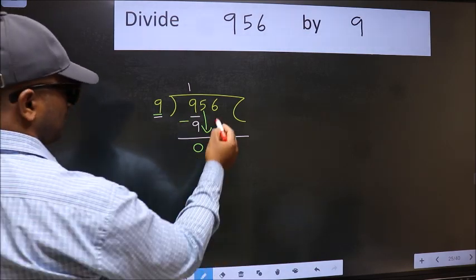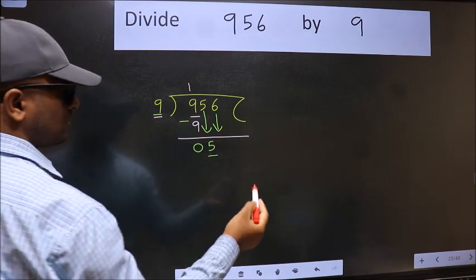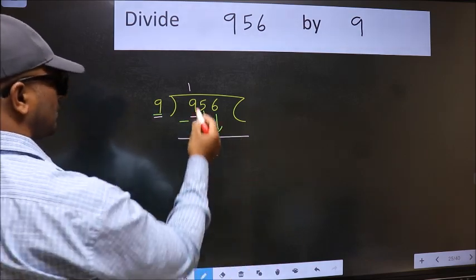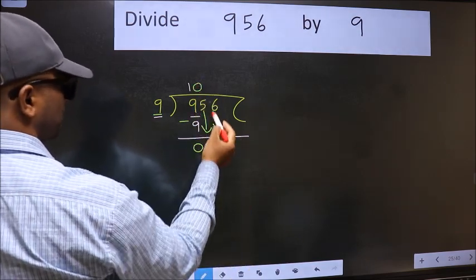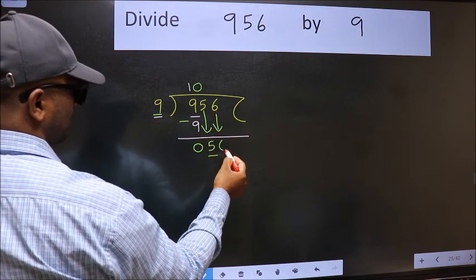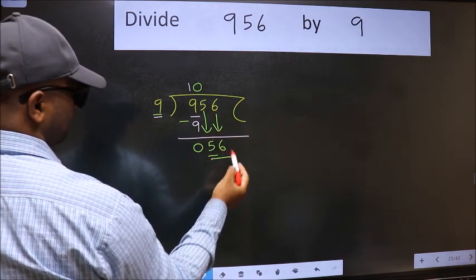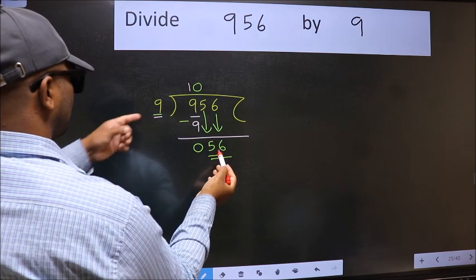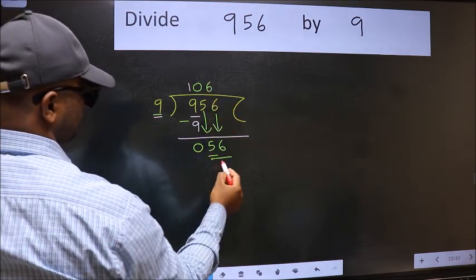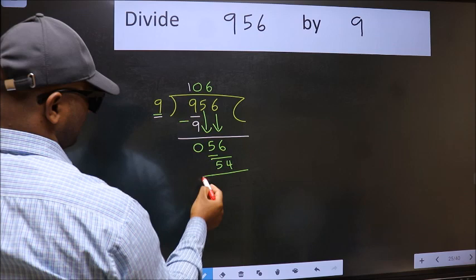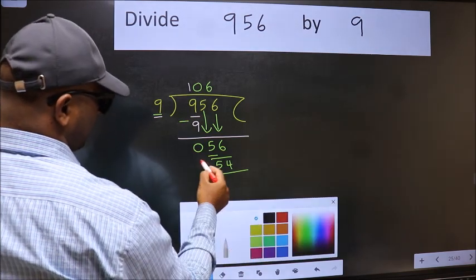The rule to bring down the second number is we should put zero here. Then only we can bring this number down. Now 56. A number close to 56 in the 9 table is 9 times 6, which is 54. Now we should subtract.